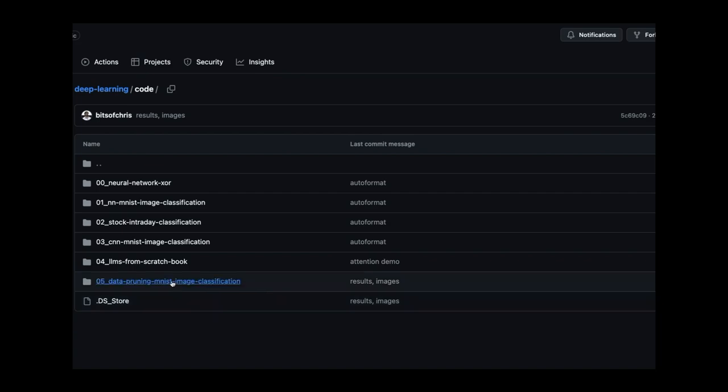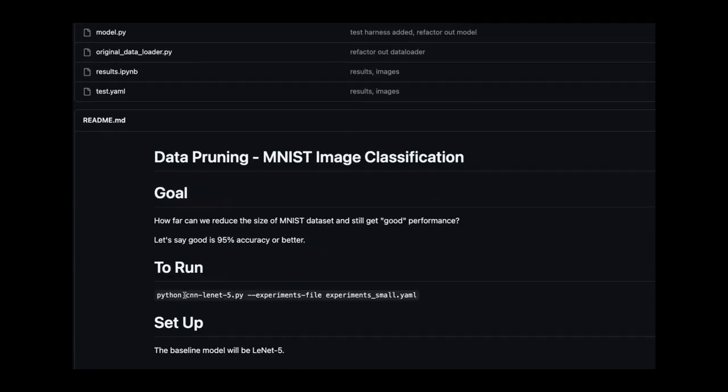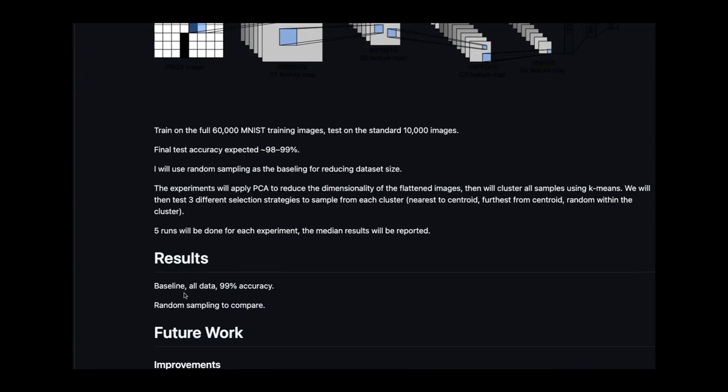So while furthest from the centroid worked really well on this problem, it might be specific to this problem, but there's still a lot of other stuff I'd like to explore. If you'd like to check out more, head to my GitHub. All the code is available there, including a bit of a write-up on how this experiment was conducted.